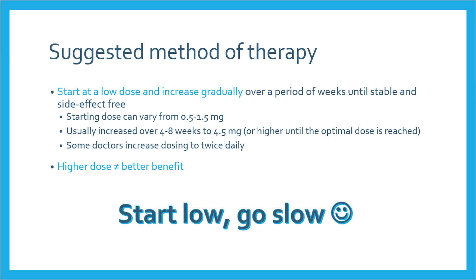Patients should take naltrexone in the way that it was prescribed by their doctor. Just like most medications that are newly prescribed, it's often a good idea to start low and gradually increase the dose over a period of time. For LDN, this is usually done over several weeks until patients are stable and side-effect-free. The starting dose ranges from 0.5 to 1.5 milligrams and is increased over 1 to 2 months to a maintenance dose of 4.5 milligrams.